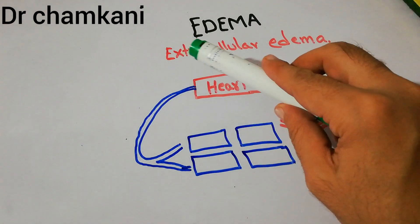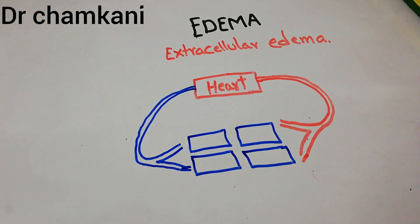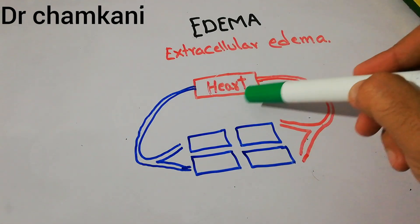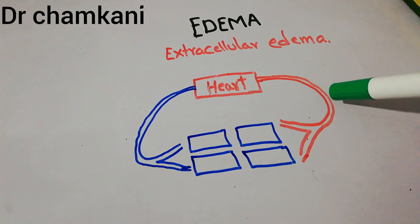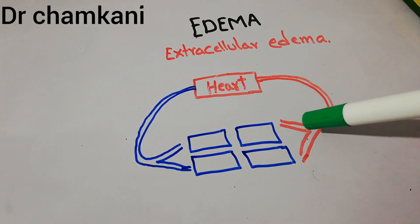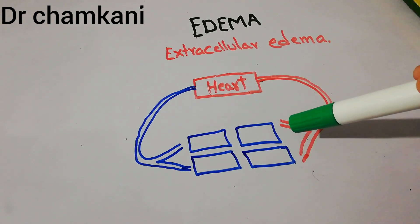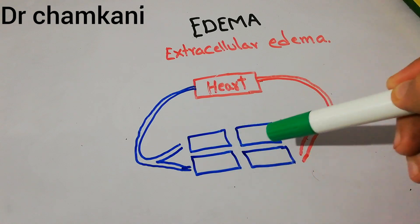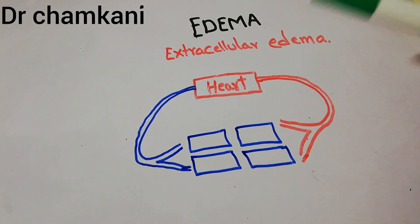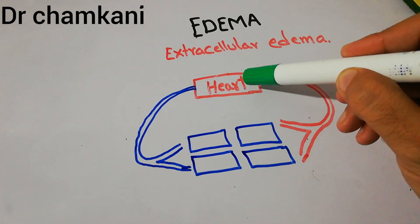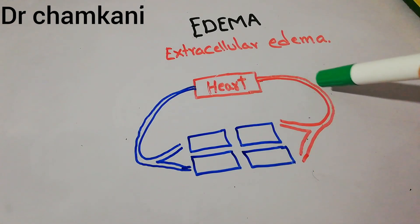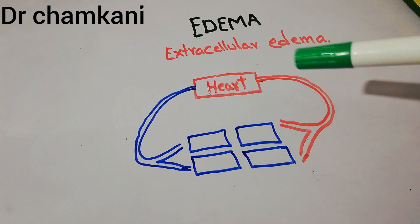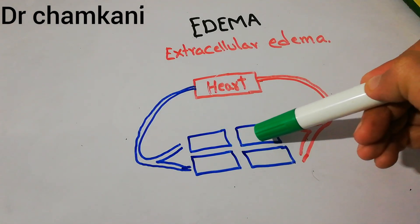To understand the causes of extracellular edema, we must know that the heart pumps blood through the aorta, different arteries, arterioles, and through the capillaries into different organs, tissues, and cells. Oxygenated blood comes through different blood vessels and finally through the capillaries, and plasma basically leaks out into the interstitium.